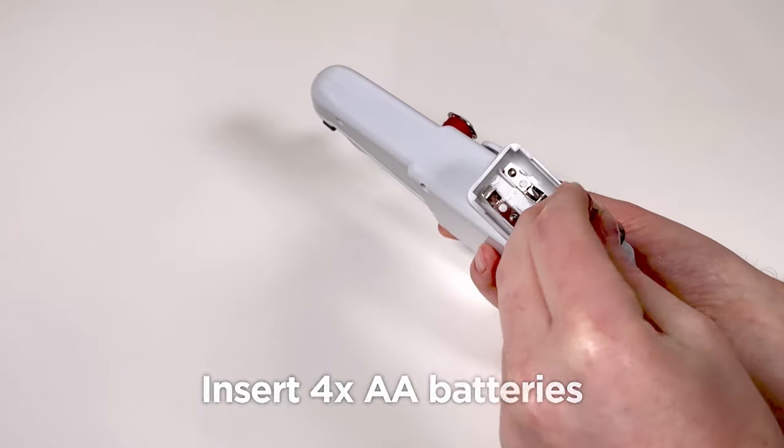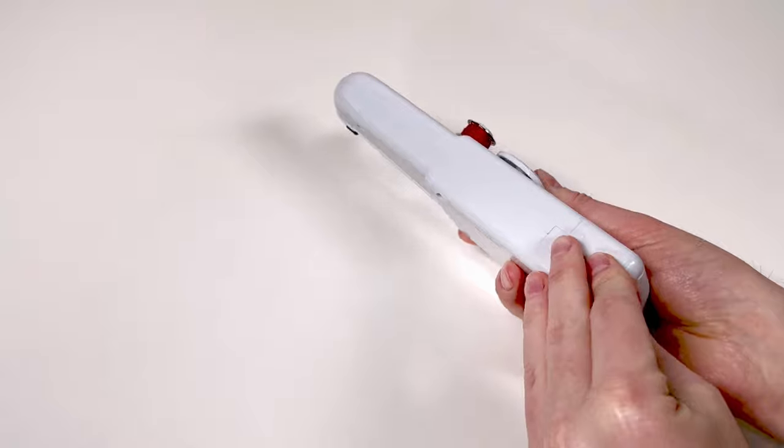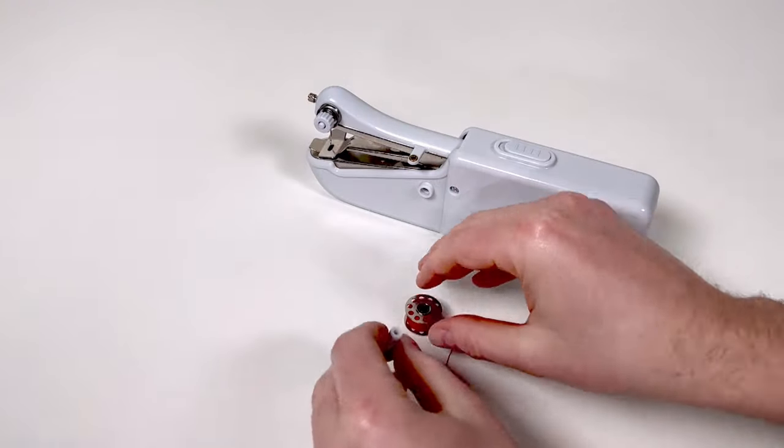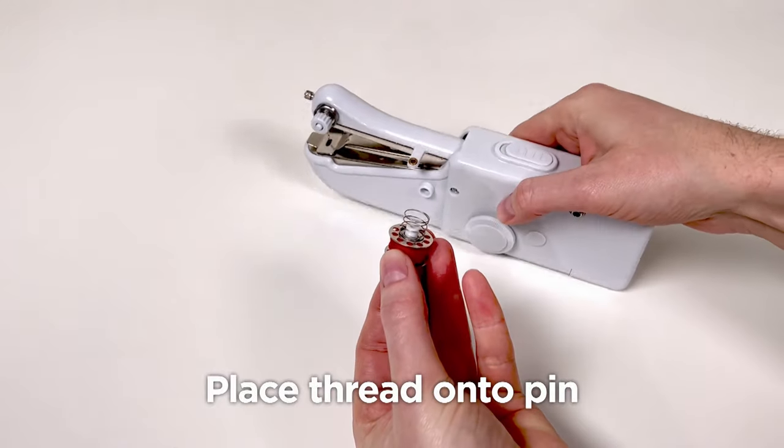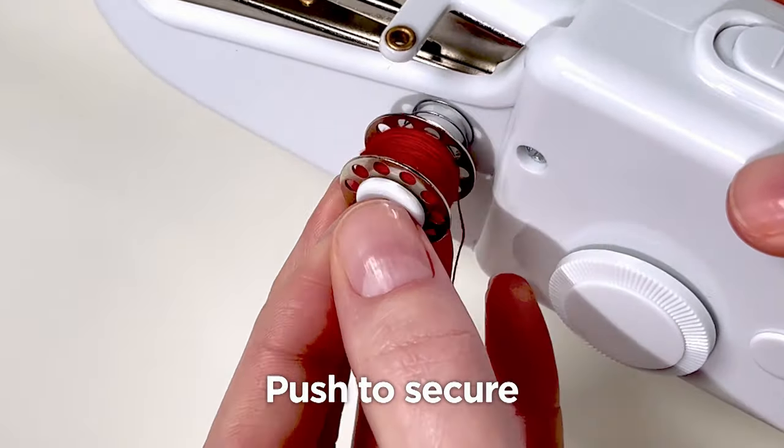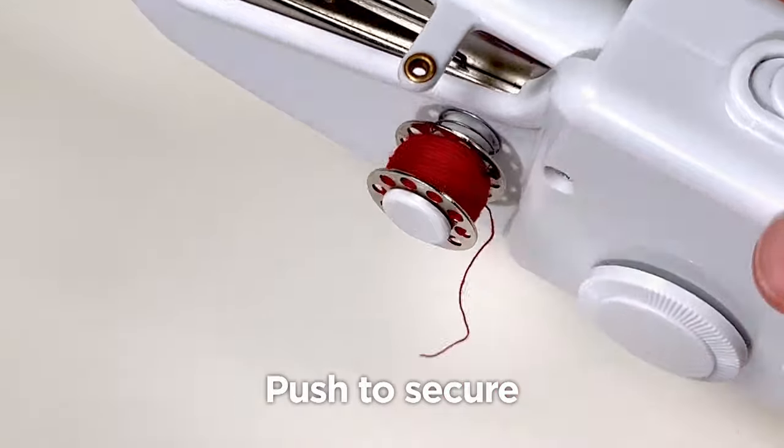Now magic stitch does come pre-threaded, but for when you need to do this, we're going to show you how to thread the machine. Place your thread of choice on the pin and secure it to the side of the magic stitch. Make sure that the spring is between the bobbin and your magic stitch.